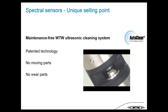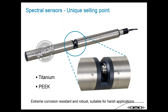One really unique function for spectral sensors is our integrated ultrasonic cleaning technology — no moving parts and no wear parts. Another key topic is materials: all metal parts on the sensor are made of titanium, eliminating corrosion problems. The plastic parts are made of PEEK, an extremely robust industrial plastic material.